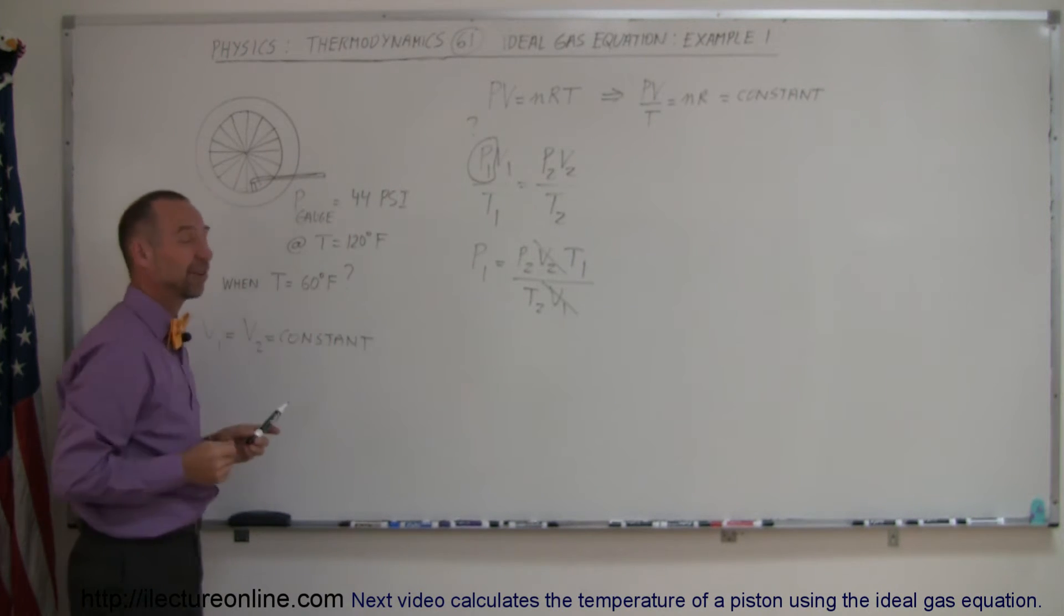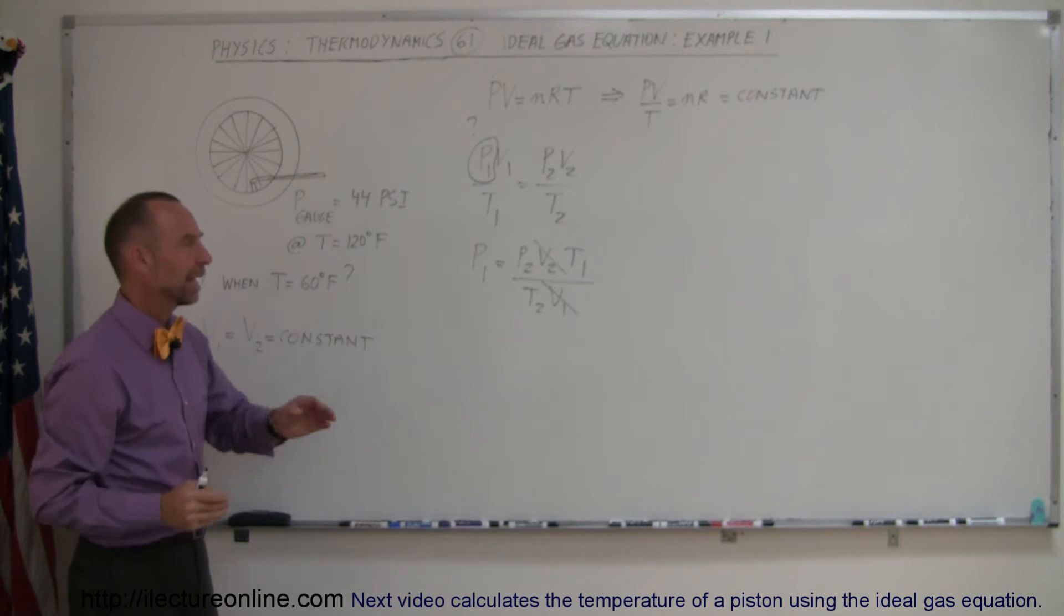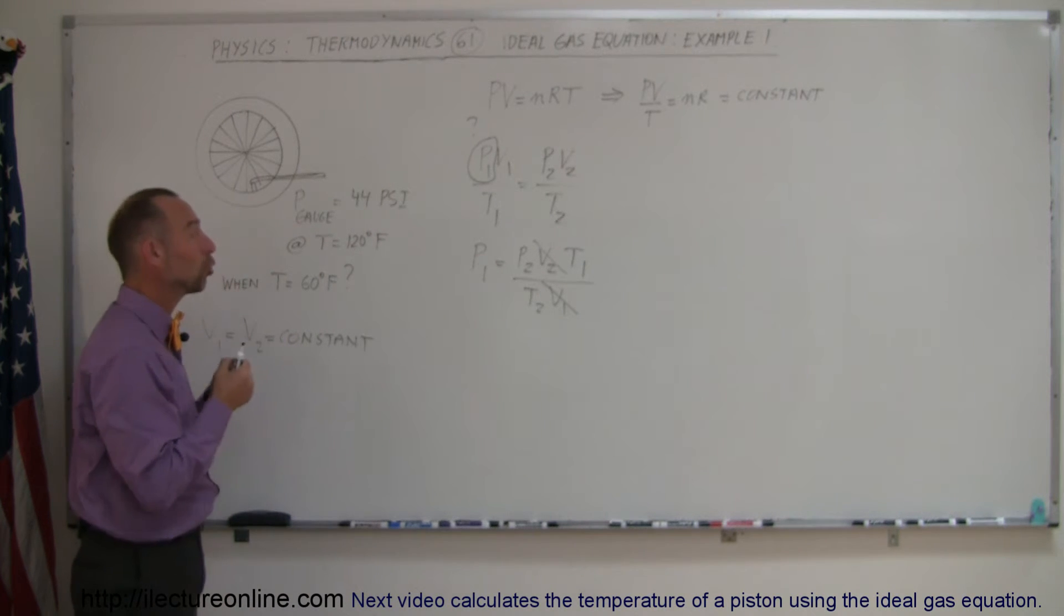First of all, the temperature was expressed in Fahrenheit degrees and we probably have to convert that to Kelvin. And secondly, we're talking about gauge pressure here and we do not want to put gauge pressure into this equation, we want to put in total pressure.